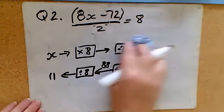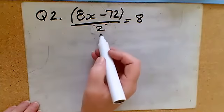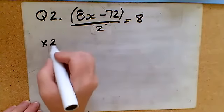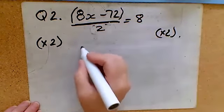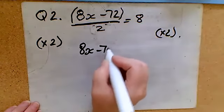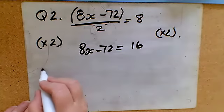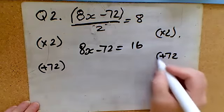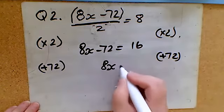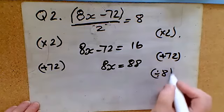So let's just show you that using the balancing method rather than the function machine. The first thing to do would be to multiply both sides by 2, so 8x minus 72 would be 16. Then I would add 72, so 8x would be 88. And then I would divide both sides by 8.